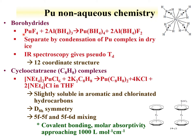Borohydrides have been prepared using plutonium tetrafluoride as a starting compound and aluminum borohydride as a reactant, yielding plutonium borohydride. This can be separated by condensation of the complex, and IR spectroscopy has been examined; the compound has a pseudo-Tᵈ coordination space group. Sandwich compounds have also been produced using halides as starting materials; the resulting compound has D₈ₕ symmetry from the eight-membered ring, with orbitals dominated by 5f and 5f–6d mixing. The molar absorptivities from the f–d mixing approach 1000, giving very colorful complexes.